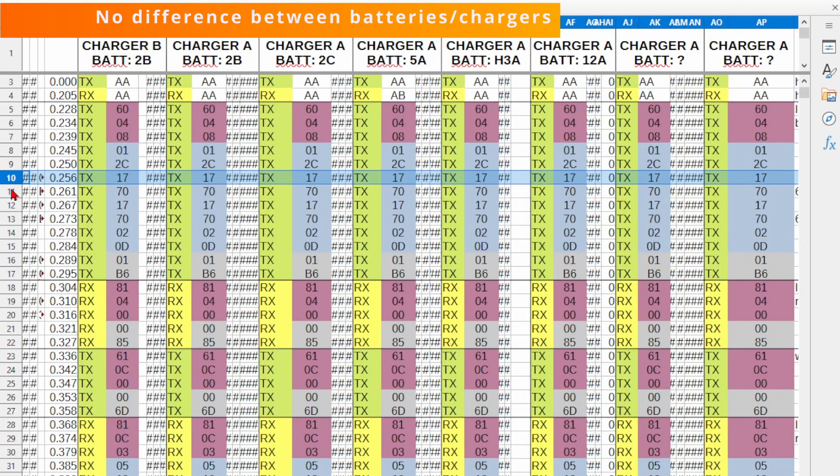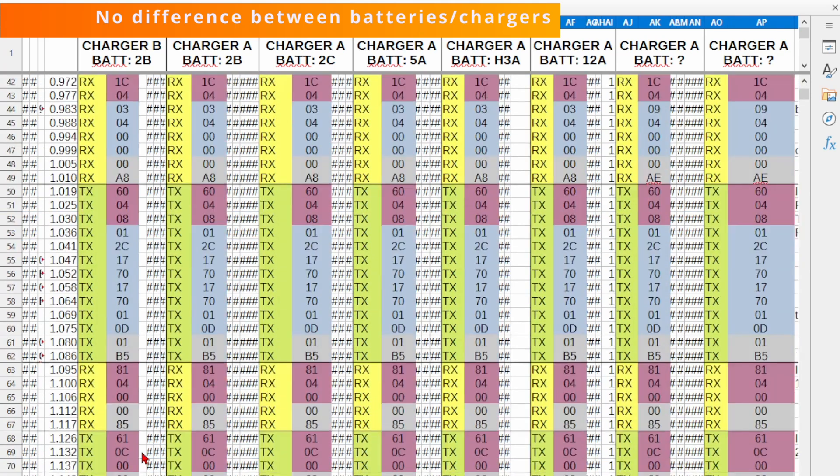The first thing we notice is that there is no difference with different batteries or chargers. So devices don't have a unique ID, and the charger is not taking any extra notice of the high output batteries and their bigger cells.